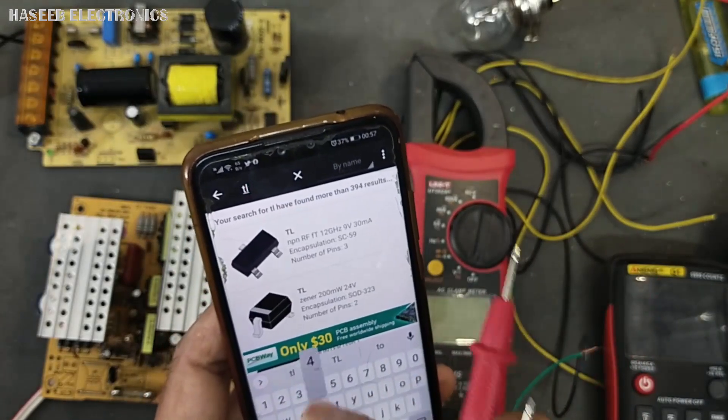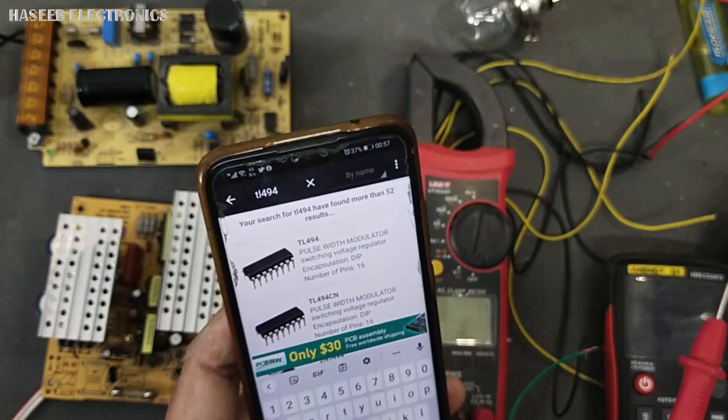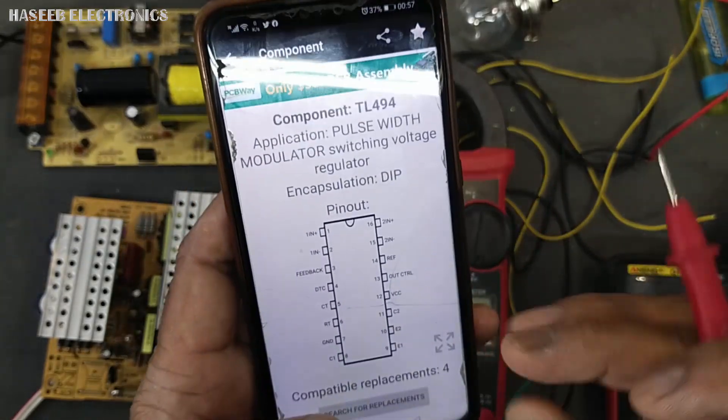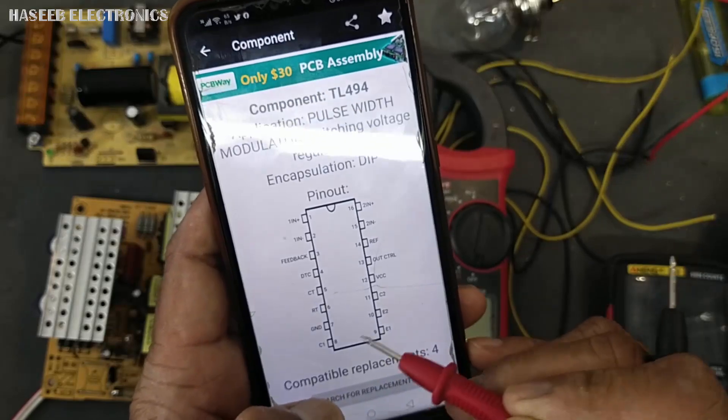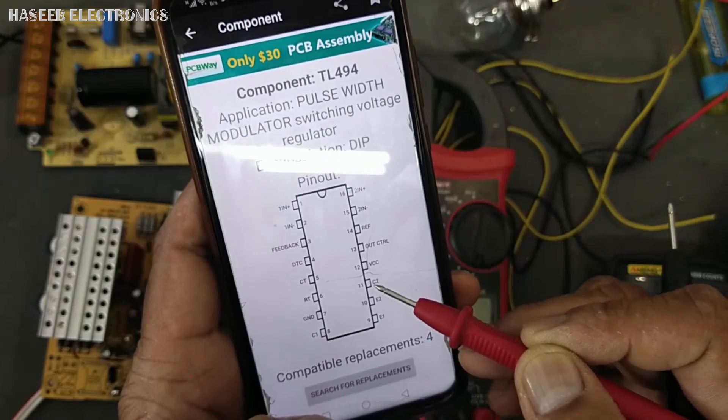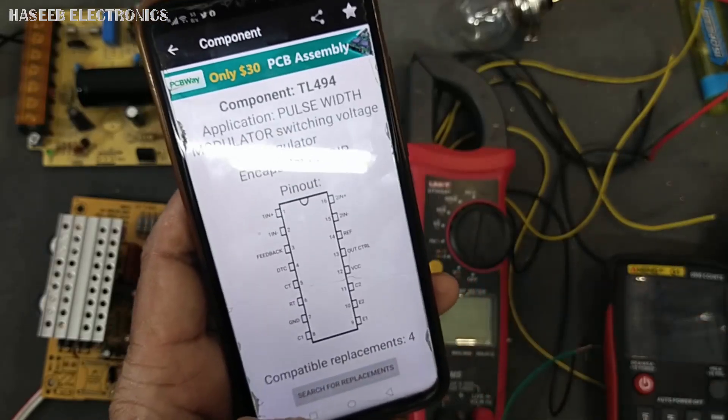Here it is using TL494. If you don't know about the pinout, just check where is the output. So here is E1, E2, emitter number one, emitter number two, collector number one and collector number two.